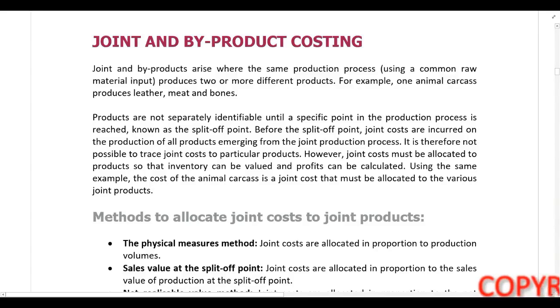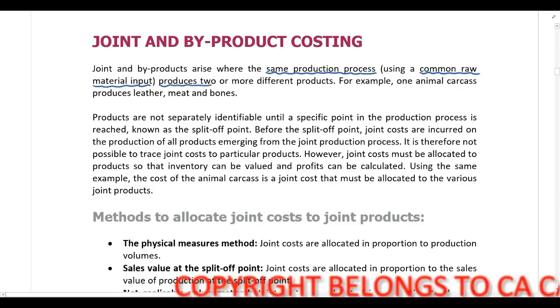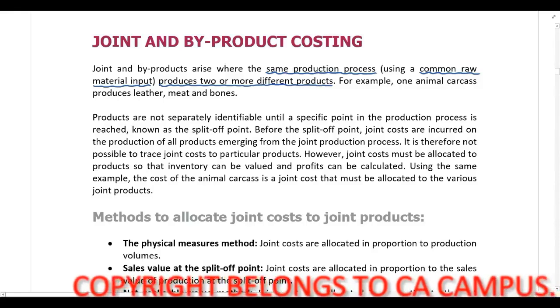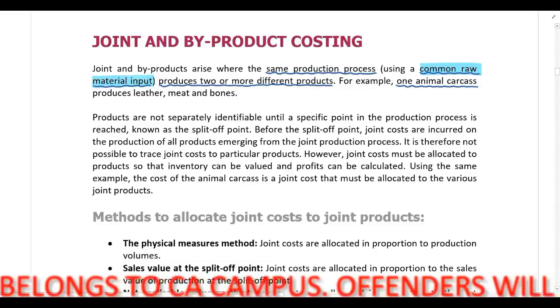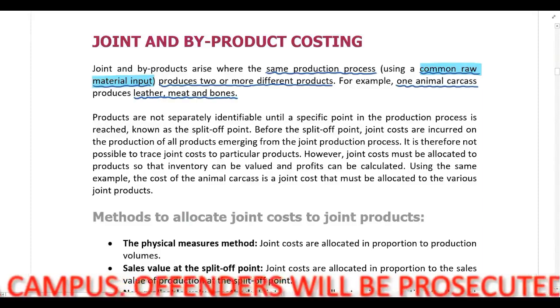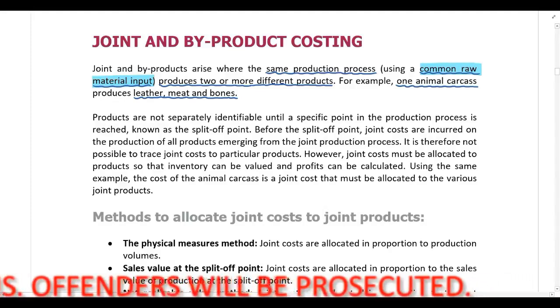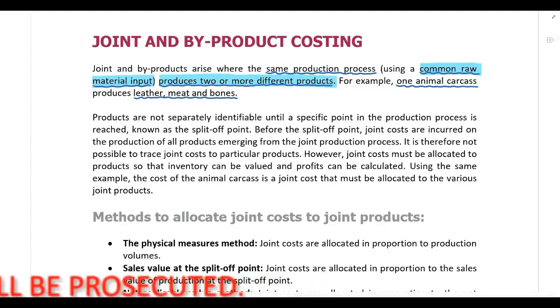In this lecture we are going to be looking at joint and byproduct costing. Joint and byproducts arise when the same production process using a common raw material input produces two or more different products. For example, one animal carcass is the common raw material input. When that carcass is processed it results in leather, meat and bones being produced — so one common raw material input produces two or more different products. Let's draw this up.